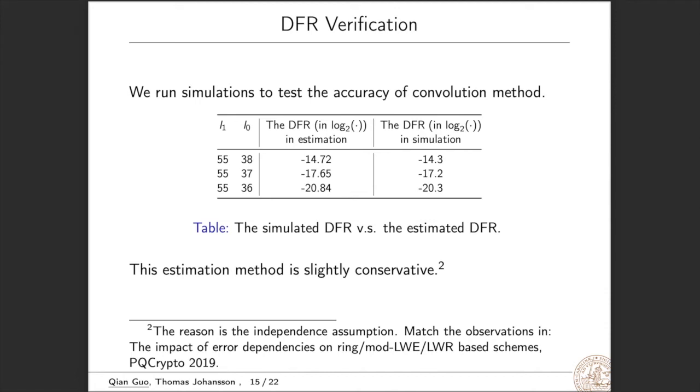We run simulations to test the accuracy of the convolution method. This table shows the comparison of the simulated DFR and the estimated DFR. The parameters are from HQC 256-1. So we see that this estimation method is accurate but slightly conservative. The reason is the independence assumption. This matches observations in lattice-based crypto. Well, removing the independence assumption could lead to a much larger DFR estimation. But in practice, each xi could be slightly dependent. So the actual DFR could be slightly larger.